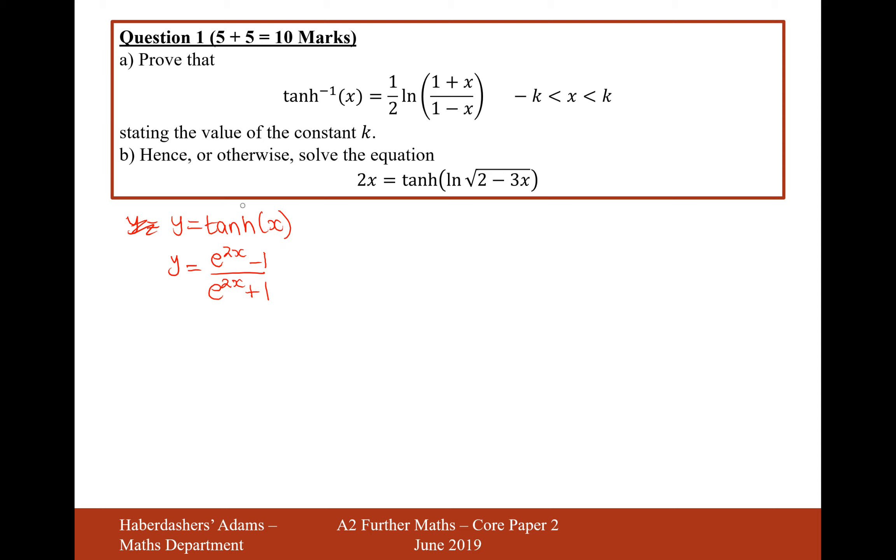You can recall this by doing sinh over cosh and then just recalling your definitions of sinh and cosh and then simplifying. Let's now multiply that e to the 2x plus 1 onto the other side and then expand the bracket.